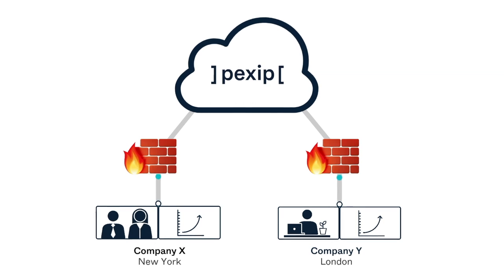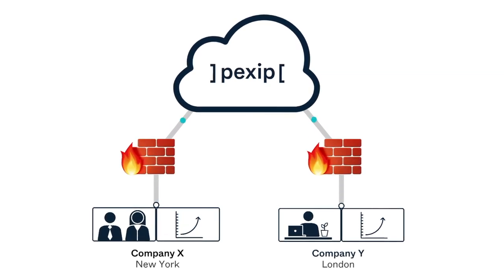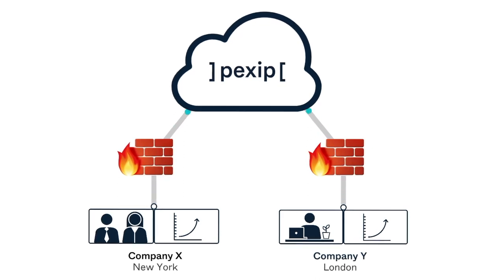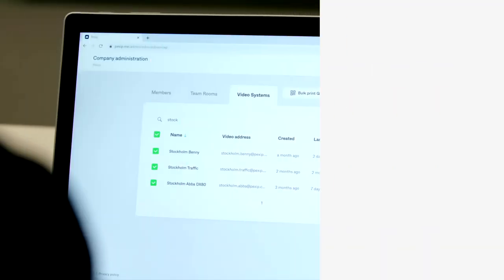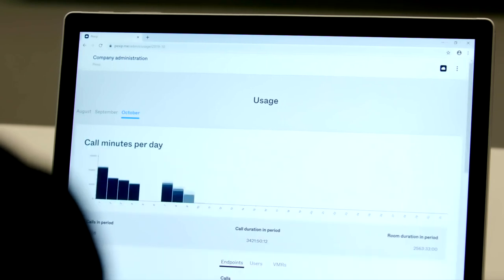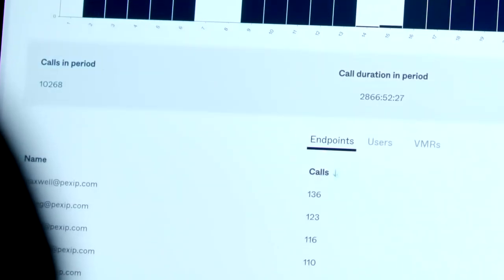Importantly, when your video system is registered to the PexSYP cloud service, you can safely place your video system behind the corporate firewall, because as part of the video subscription, there is a firewall traversal solution included. With a user license, you can also get access to company-wide advanced management and reporting functionalities.